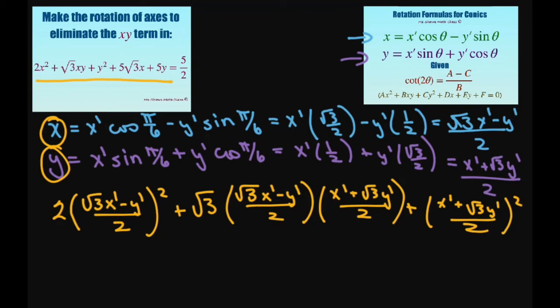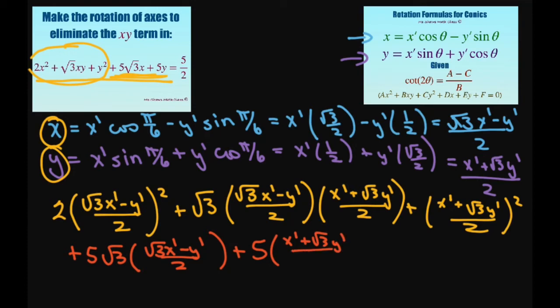Now that's for this part here. We still have to do those. So this one's going to be plus 5 times square root of 3 x prime minus y prime divided by 2, and then we have plus 5 times x prime plus square root of 3 y prime divided by 2. And all this equals 5 divided by 2.